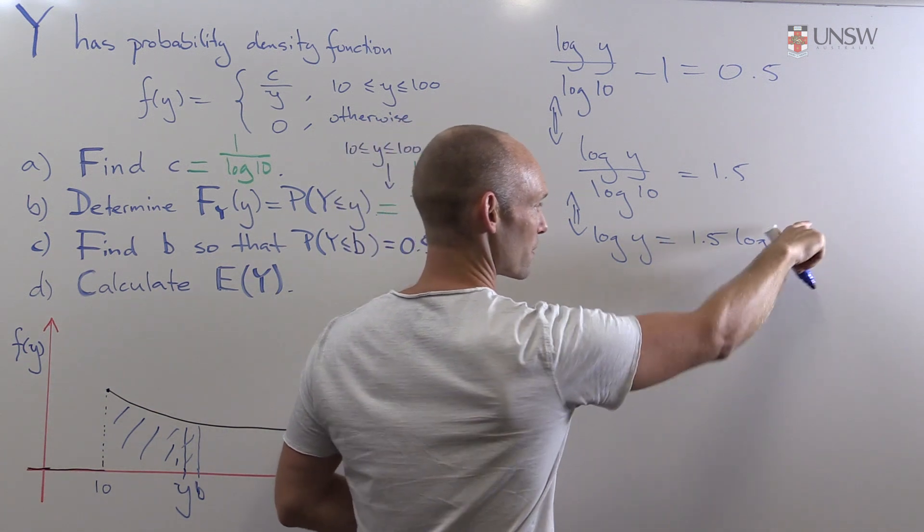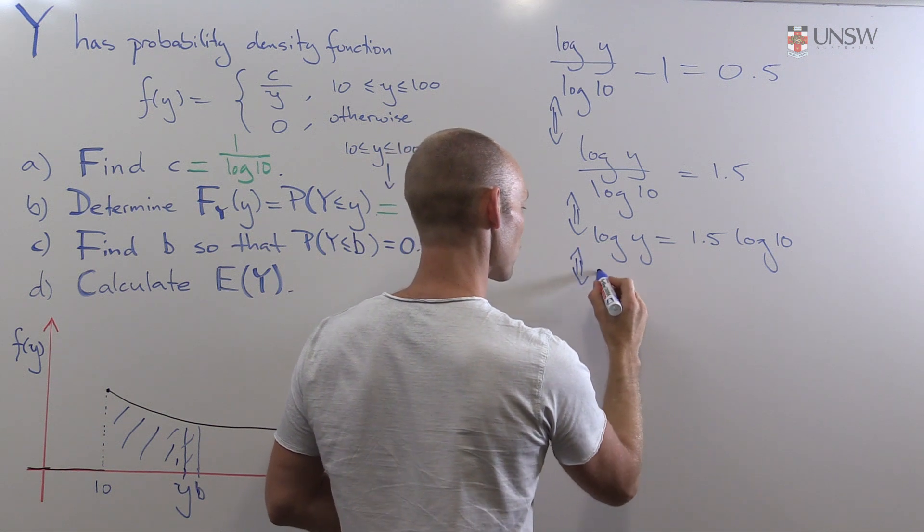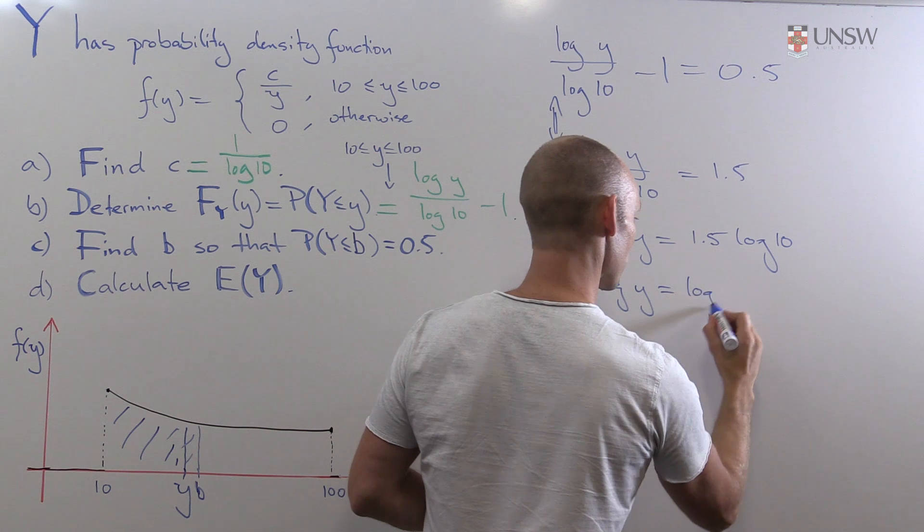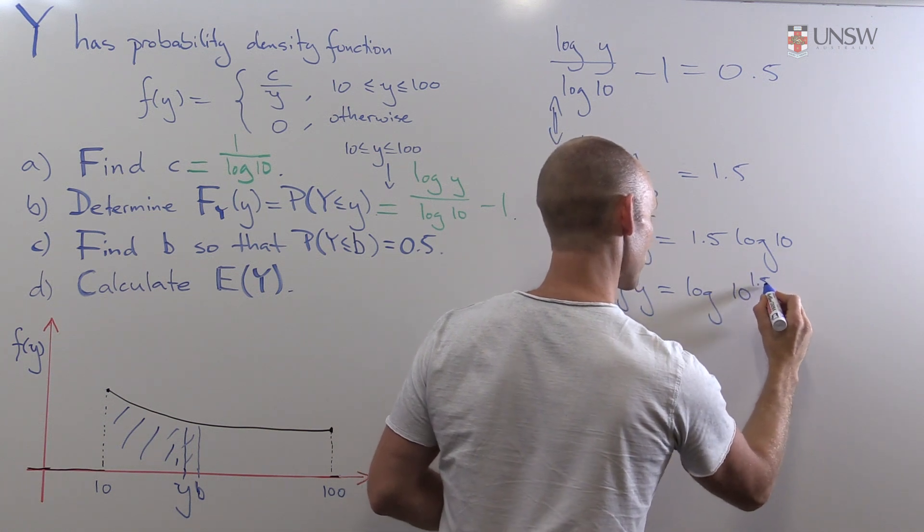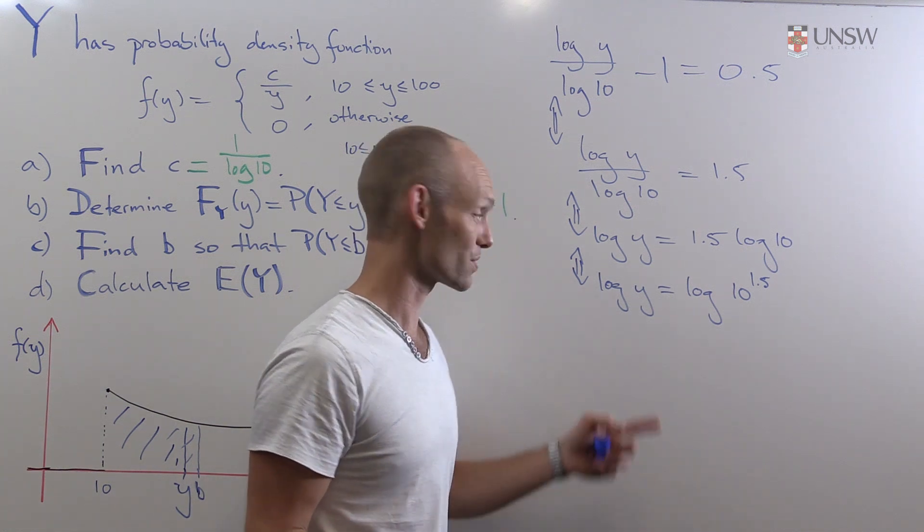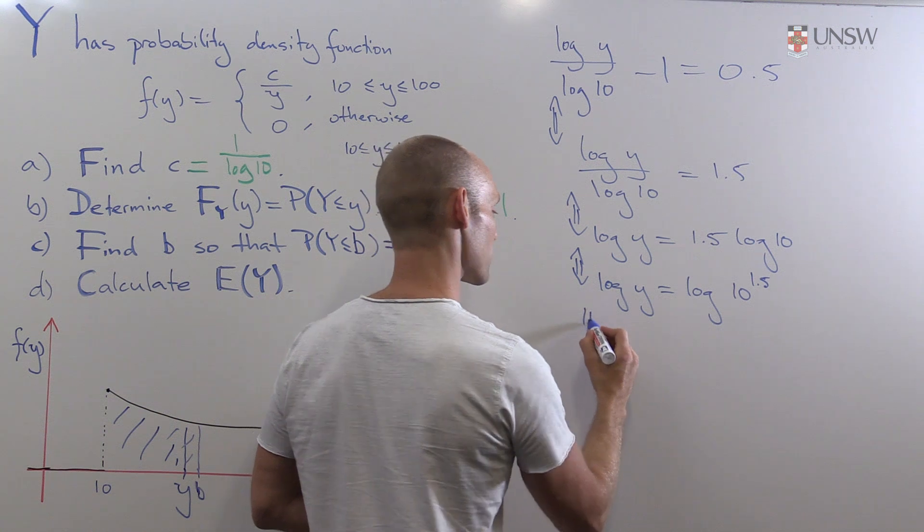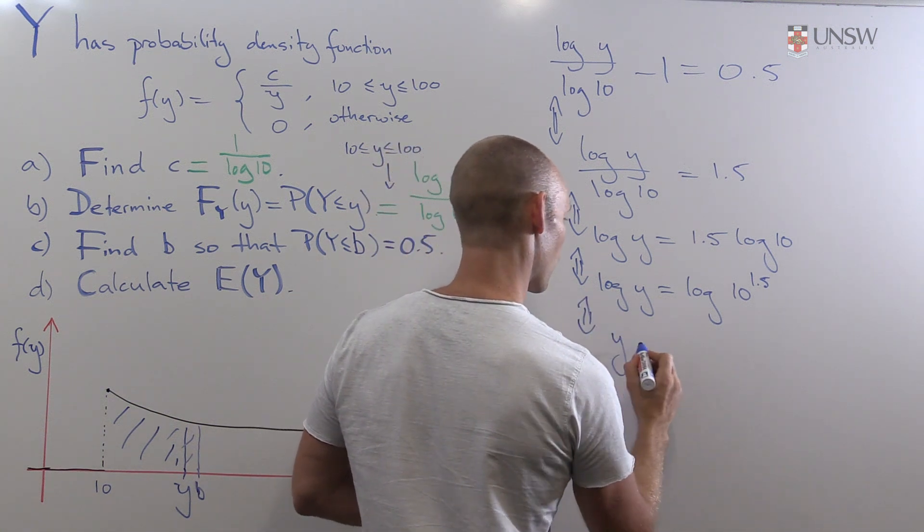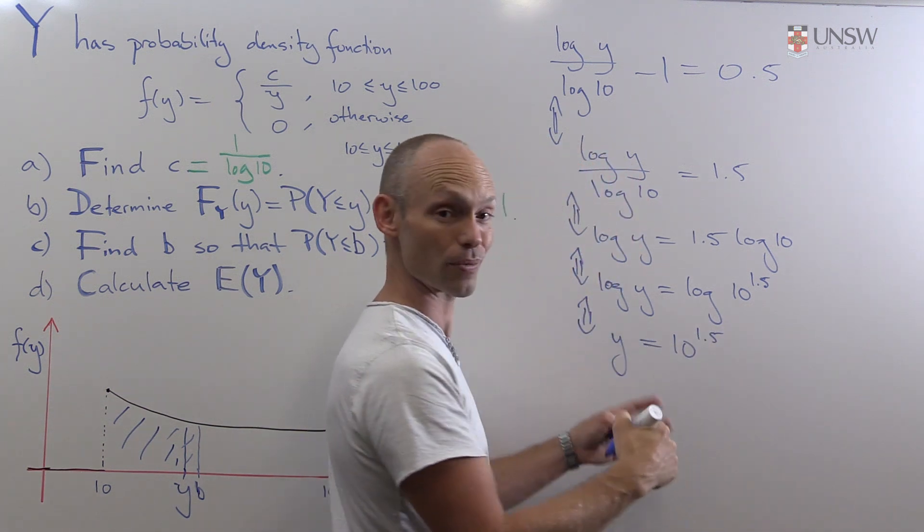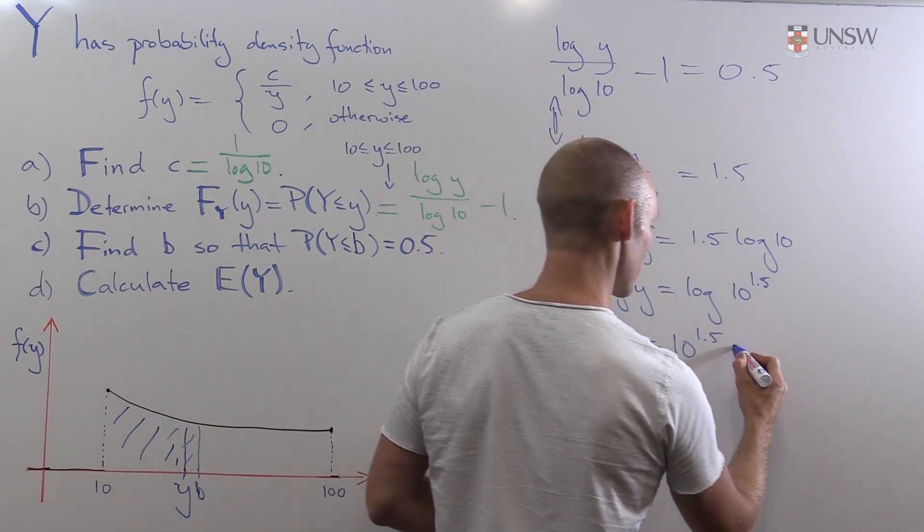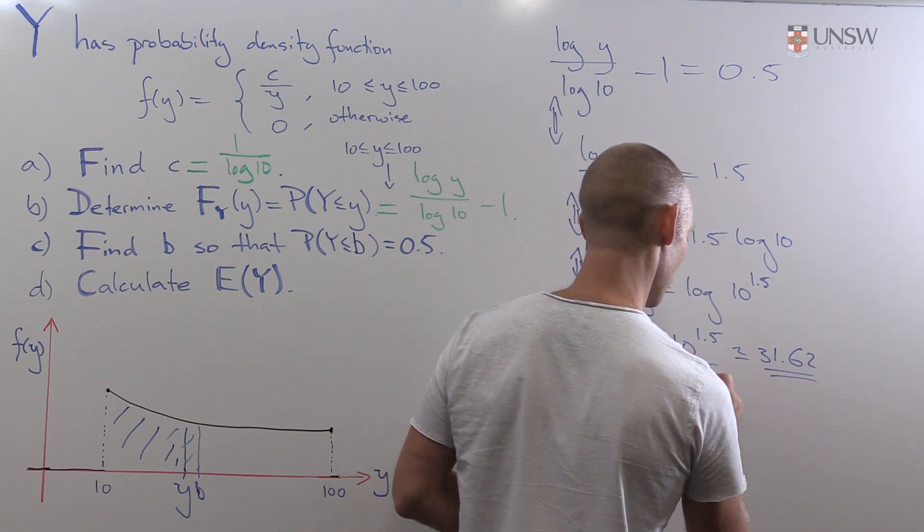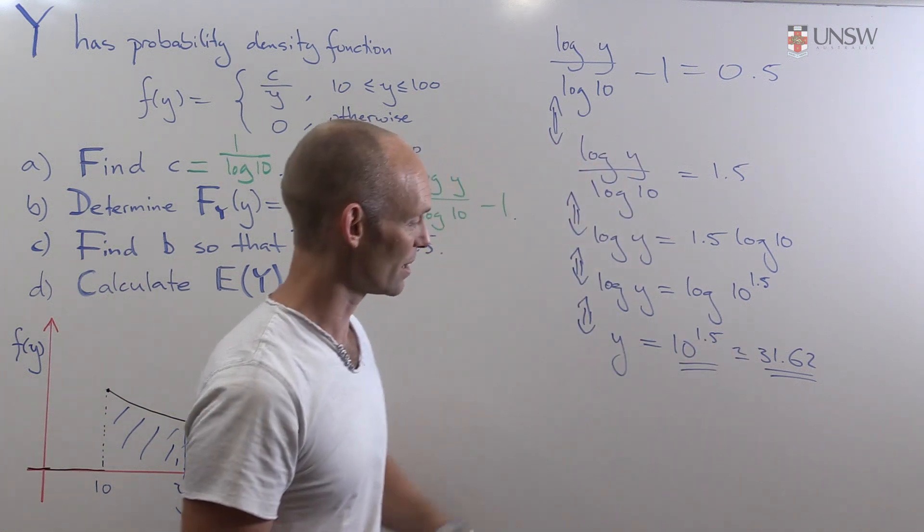And now we can use the laws of logarithm once again. Moving the 1.5 up there, just like we did with 2 except in reverse. So that's the logarithm of 10 to the power of 1.5. And now we just have to get rid of the logarithms by taking the inverse function, in other words, the exponential function. Which leaves us then with y is equal to 10 to the power of 1.5. And that's the answer. Or if you want some actual number, it's roughly about 31.62.